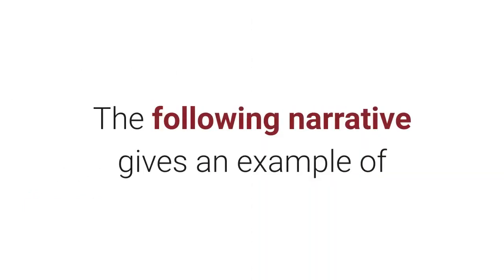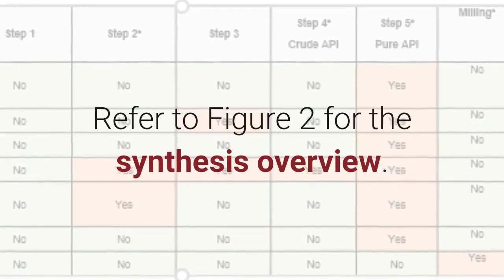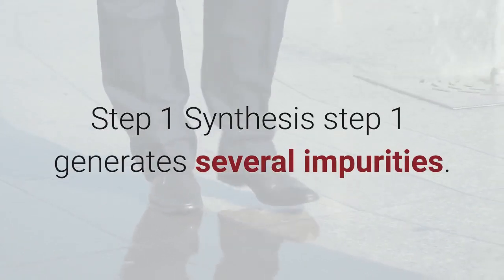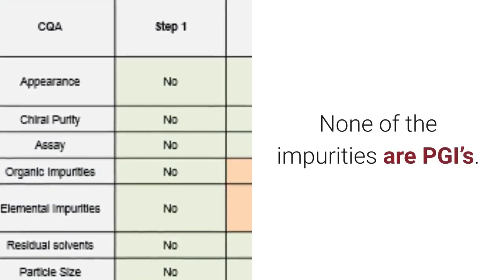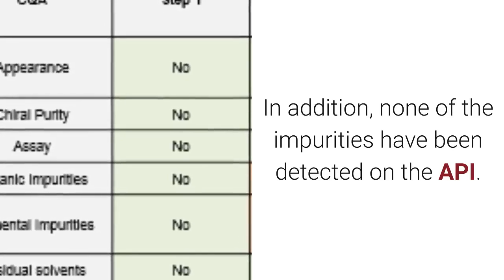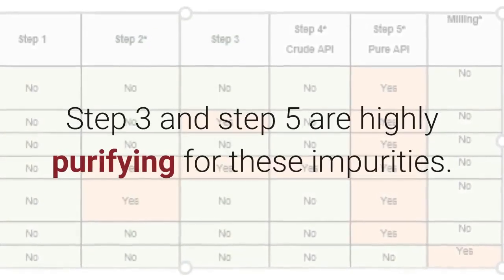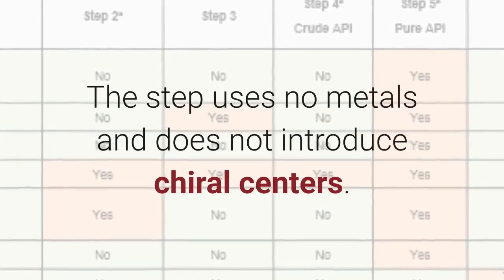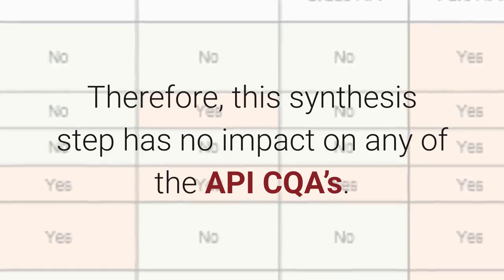The following narrative gives an example of correlating synthesis steps to their respective CQAs. Refer to Figure 2 for the synthesis overview. Step 1 generates several impurities, including unreacted starting material. None of the impurities are PGIs, and none have been detected on the API. The unreacted starting material purges in the next step; Step 3 and Step 5 are highly purifying for these impurities. The step uses no metals and does not introduce chiral centers. Therefore, this synthesis step has no impact on any of the API CQAs.